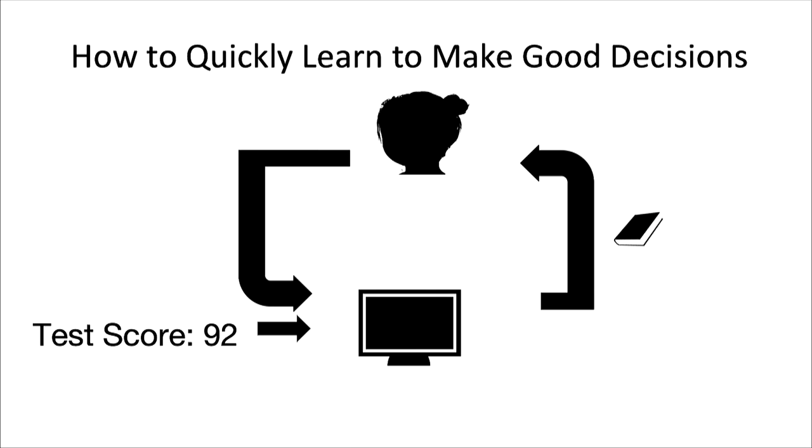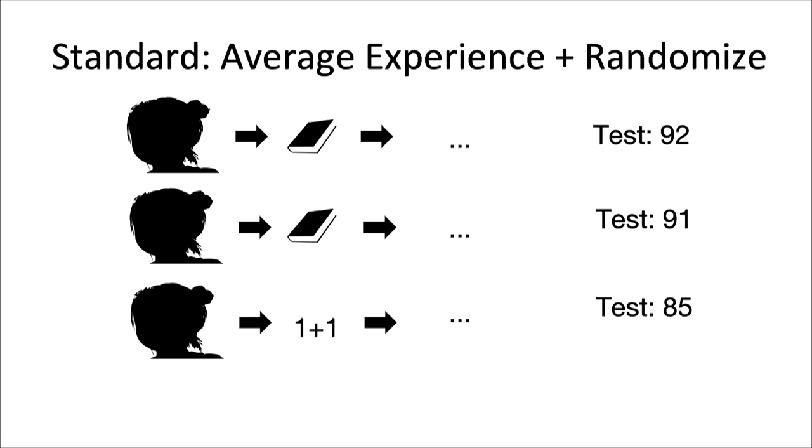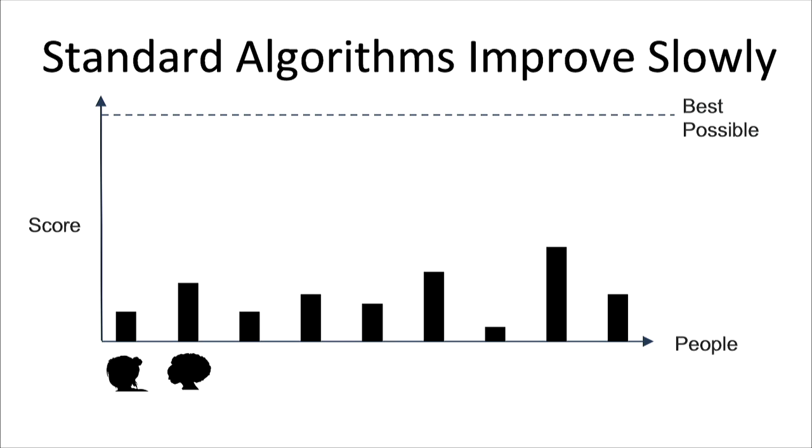When we think about these systems, a lot of the standard or classic approaches tend to look at what seems to have worked best in the past and try that in the future, perhaps plus a limited amount of random experimentation. Unfortunately, these types of algorithms improve slowly. In some scenarios, this is reasonable and it does not limit their final performance. We've seen some incredible successes from our colleagues at DeepMind with these types of approaches that allow computers to conquer games like Atari.